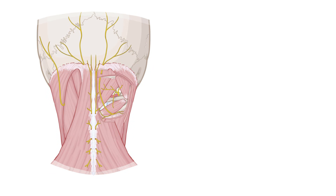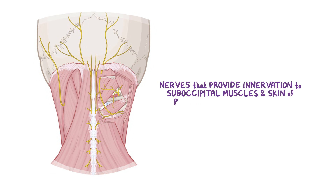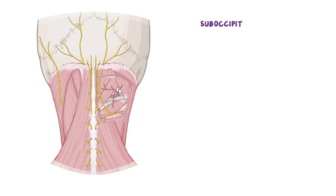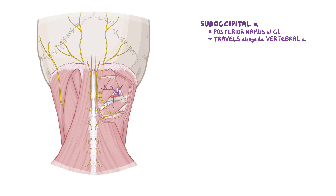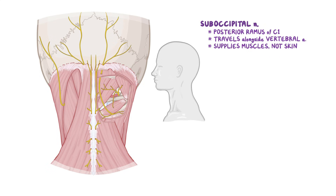Now let's look at the nerves that provide innervation to the suboccipital muscles and the skin of the posterior cervical region. First, there's the suboccipital nerve, which is actually the posterior ramus of the C1 spinal nerve. From its origin, the suboccipital nerve travels between the cranium and the atlas until it courses within the suboccipital region alongside the vertebral artery. One thing to remember is that this nerve innervates the suboccipital muscles, but not any of the overlying skin.